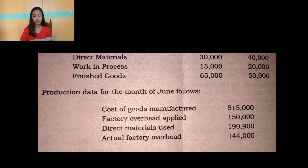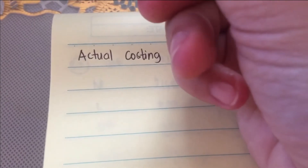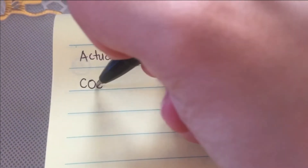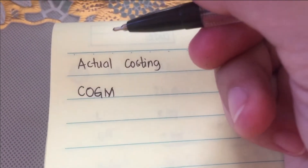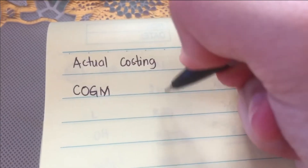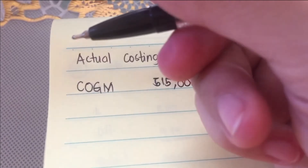But let's also compute under normal costing. Start with the actual costing. We have the cost of goods manufactured of P515,000. We have to deduct the overhead applied.